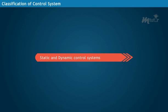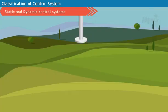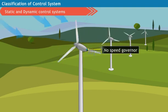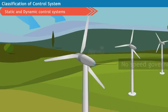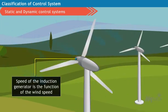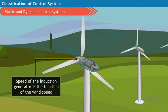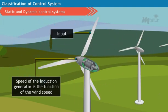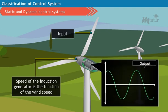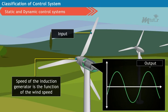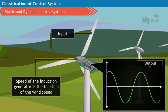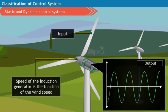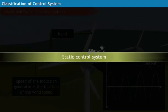Static and dynamic control systems. To understand static control system, let us consider a windmill which is not employed with a speed governor. In such case, the speed of the induction generator is the function of the wind speed. Here, the wind speed is the input and the frequency of induced EMF in the induction generator is the output. As the output variations depend on the input wind speed, the system is called a static control system.